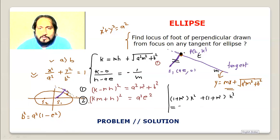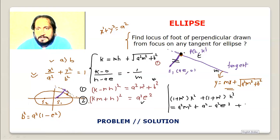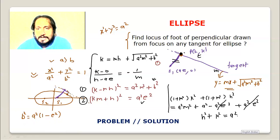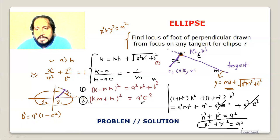Adding the two equations and simplifying with (1 plus m squared) as a common factor: we get (1 plus m squared) times (h squared plus k squared) equals (1 plus m squared) times a squared. Since (1 plus m squared) is non-zero, we cancel it, giving h squared plus k squared equals a squared, or x squared plus y squared equals a squared.